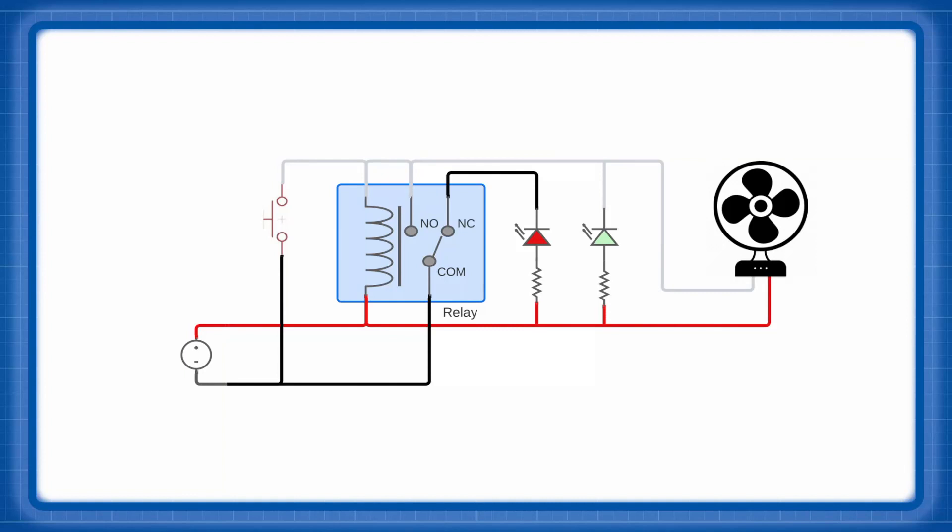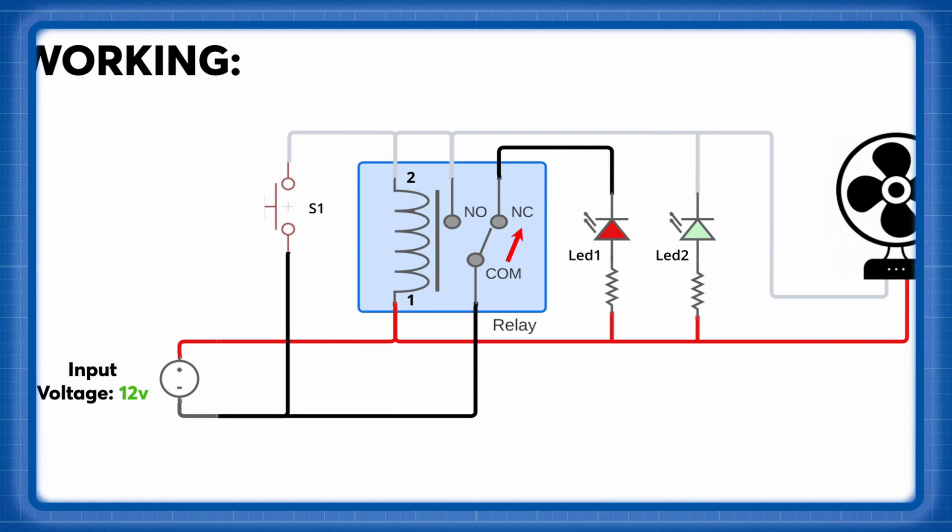As the primary component in this circuit is a relay, the working is straightforward. Initially, when the circuit is off, the common pin is connected to the normally closed pin.